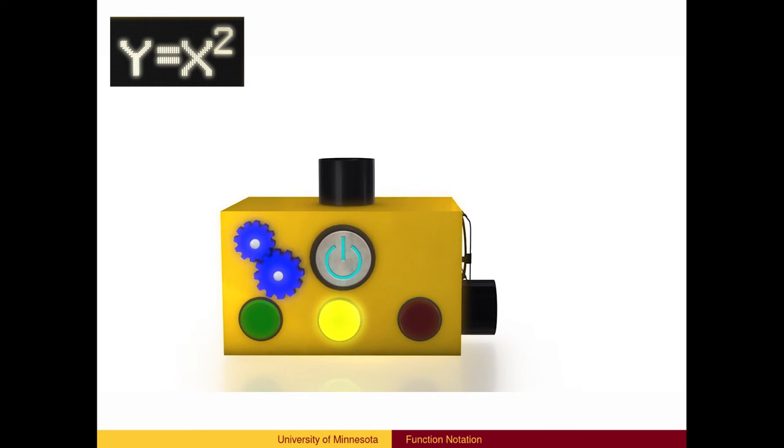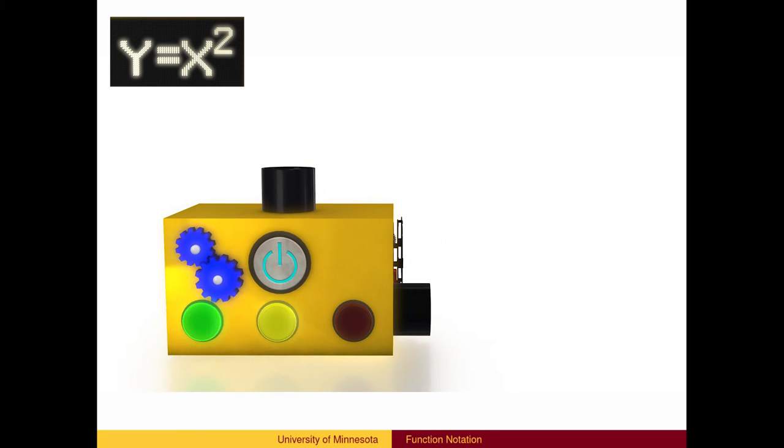Inside the box, a calculation is made. In this case, the function box squares the input of 2 to produce the answer 4. The function then also has a place to output the answer.